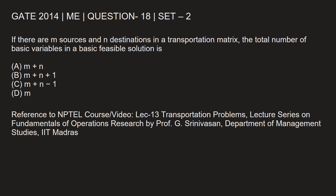This question is from the 2014 mechanical engineering paper, set 2, question number 18. If there are m sources and n destinations in a transportation matrix, the total number of basic variables in a basic feasible solution is? Let's find out.